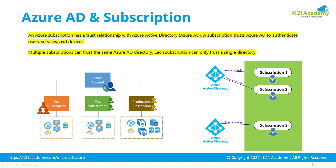An Azure subscription has a trust relationship with Azure Active Directory. A subscription trusts Azure Active Directory to authenticate users, services, and devices. So when you're protecting any application or resource inside a subscription, you can authenticate and protect those resources through the linked Azure Active Directory. Multiple subscriptions can trust the same Azure Active Directory, but each subscription can only trust a single Azure Active Directory.